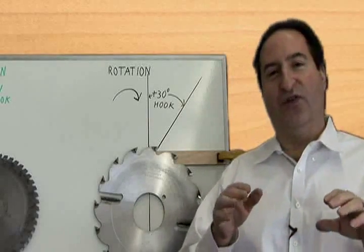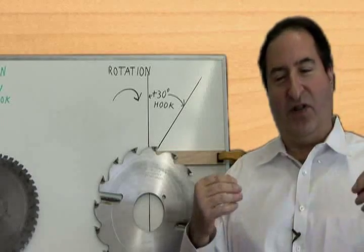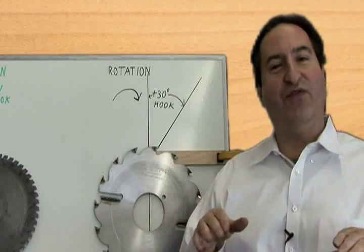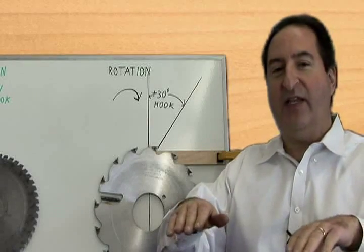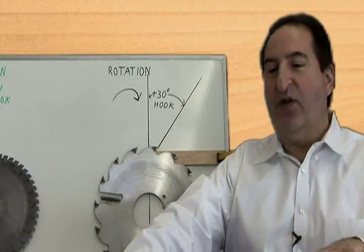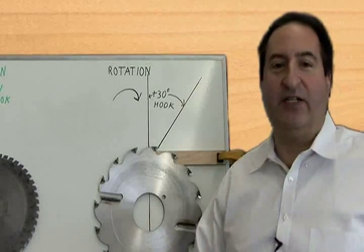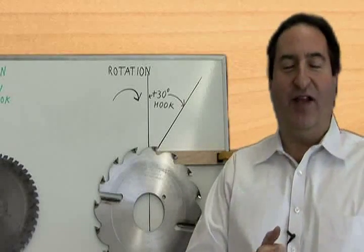When you first took your first woodshop class, if you're close to my age, they used to have a video where a gentleman was cutting on a table saw, and he had the wrong saw blade on, and the drop-off piece blew back into his stomach and actually went through him. His name was Lucky Williams.